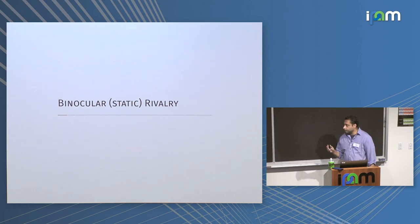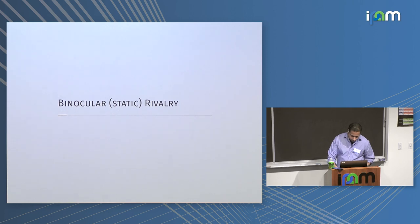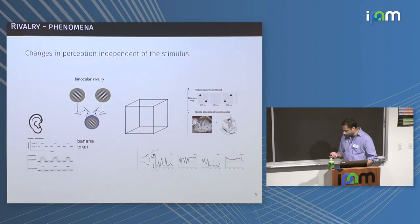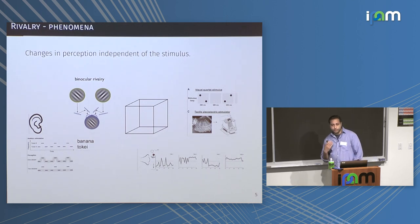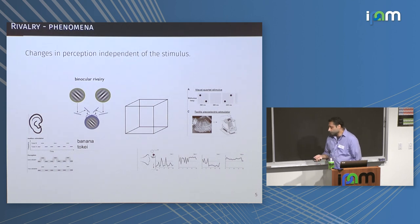I'm going to spend quite a bit of time talking about binocular rivalry specifically, then get into some other examples as well. First — what is perceptual rivalry? Perceptual rivalry is the phenomenon where you have alterations or differences in your interpretation of an object that are independent of the stimulus. That's a somewhat crude definition of it.